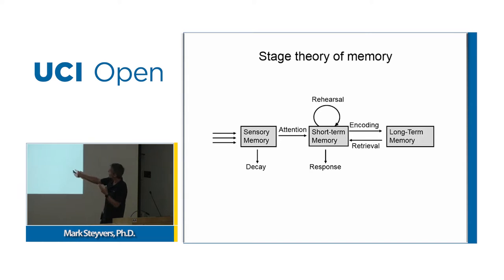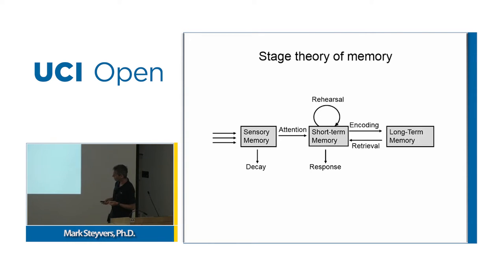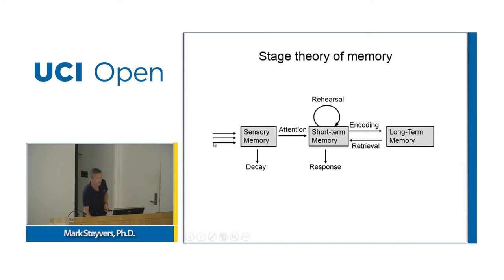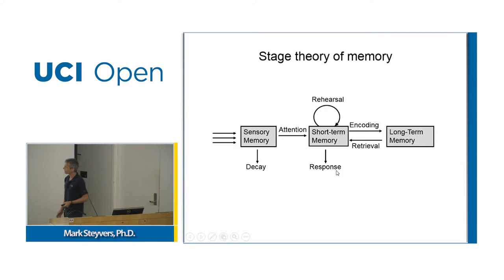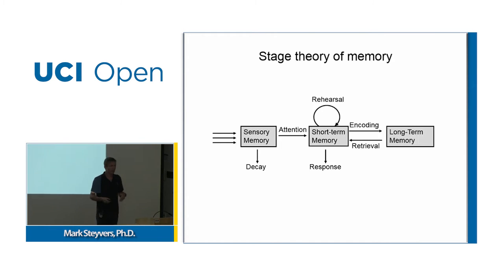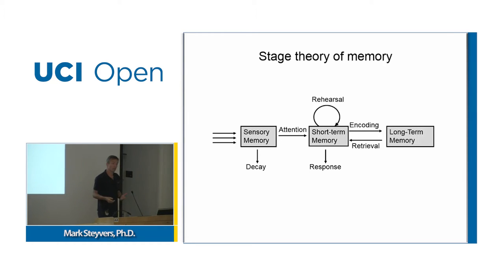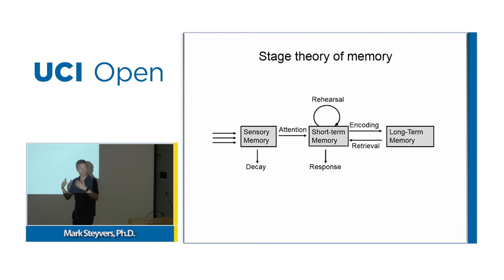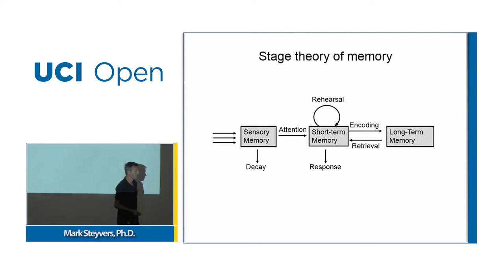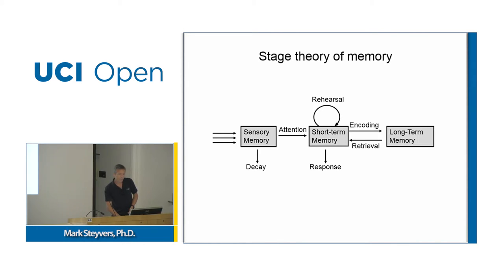There are boxes representing different stages of memory, and arrows showing how information can flow and what processes are involved. There's incoming information from the environment and outgoing information — what a participant would say or remember. The theory says what people remember overtly comes from short-term memory; you first retrieve it from long-term memory and then respond through short-term memory. This theory is very powerful because it's so precise — you can implement it in a computer program, simulate it, make predictions, and many of those predictions hold up in experiments.